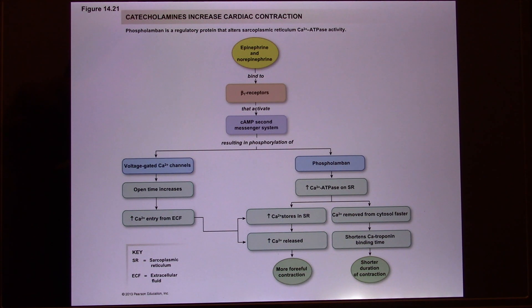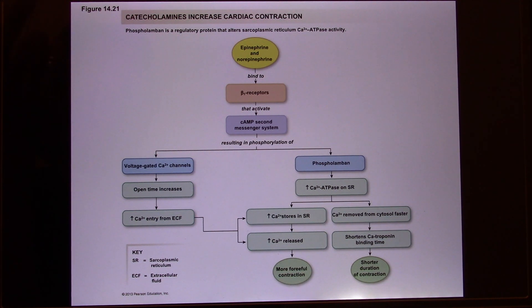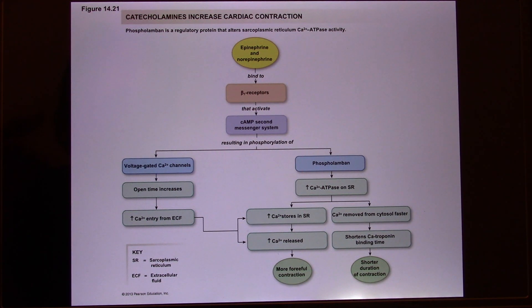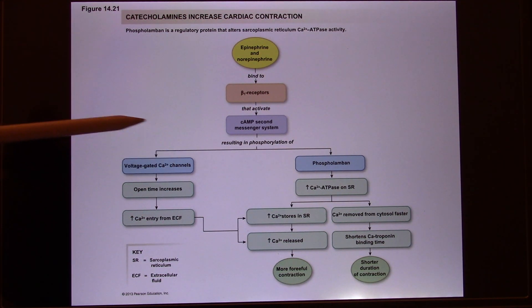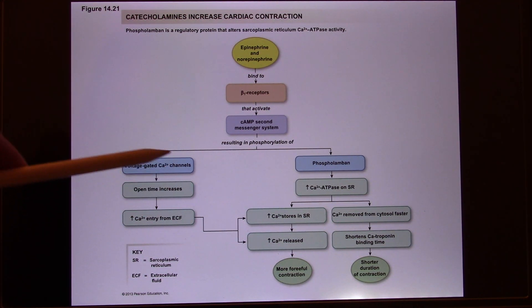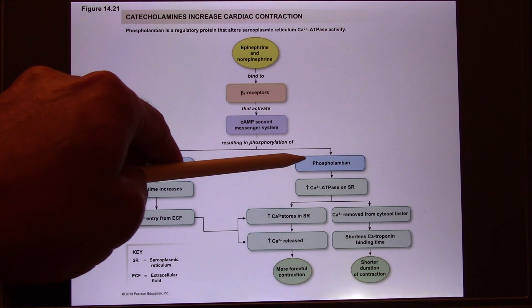Cyclic AMP increases contractility by regulating calcium. Remember, contractility depends on calcium. The system wants to make more calcium available and also quickly remove calcium from the SR after it's been released, so calcium can be released quickly again. This is regulated by the entry of calcium from the ECF to the cell by making voltage-gated calcium channels open for longer.